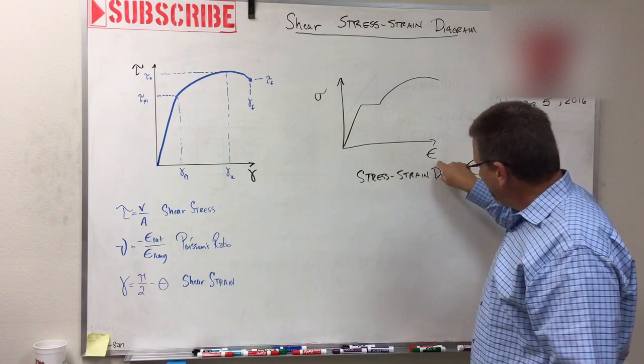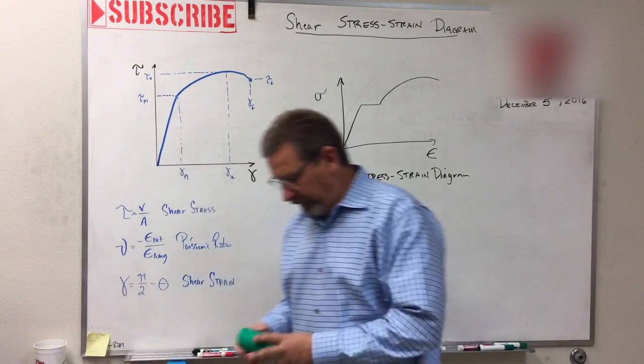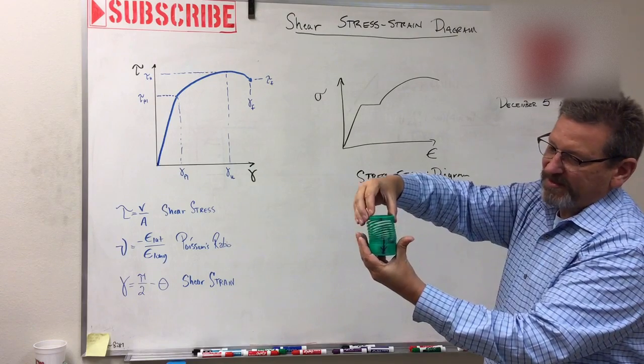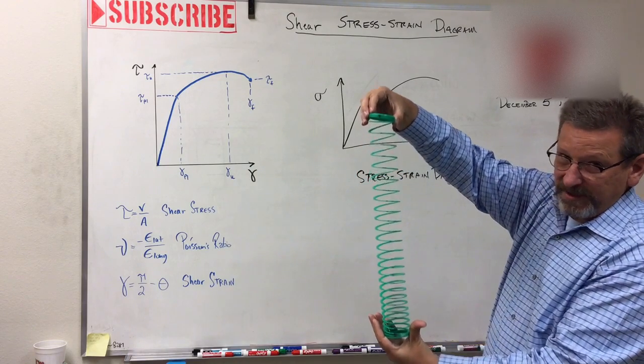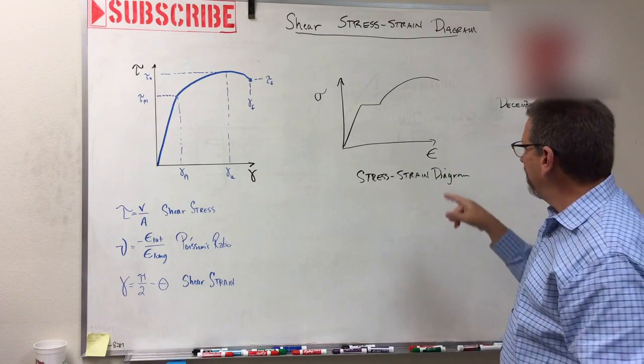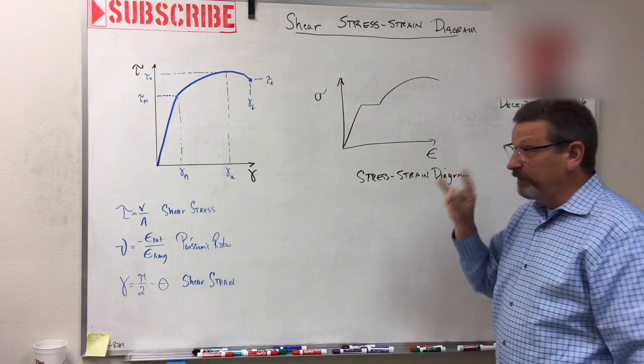If you remember, strain was deflection. Here's my slinky. If I have my arrow, as I start pulling on that it elongates in inches per inch—that's strain. So how much force am I putting on that and how much strain is it causing?